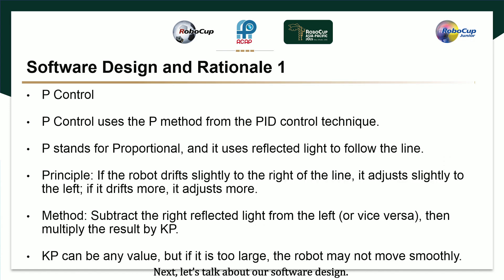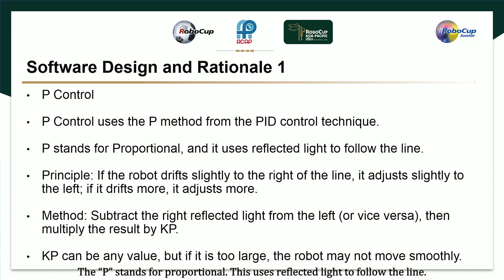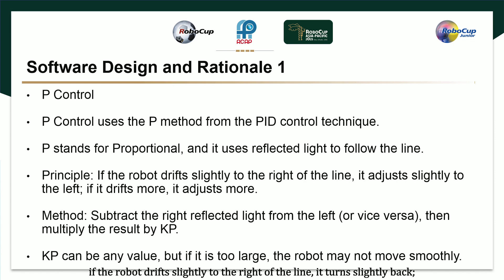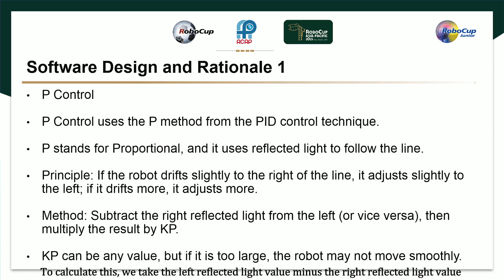Let's talk about our software design. Our program uses P control, which is the P part of the PID control method. The P stands for proportional. This uses reflected light to follow the line. The principle is simple: if the robot drifts slightly to the right of the line, it turns slightly. If it drifts a lot, it turns more. To calculate this, we take the left reflected light value minus the right reflected light value.